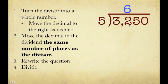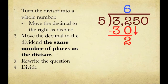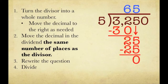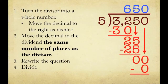Our fourth step is to do our work and actually divide. How many times does 5 go into 3? It doesn't. So we see how many times 5 goes into 32 — that's 6. 6 times 5 is 30, subtract that, giving us 2. Bring down our 5. How many times does 5 go into 25? That's 5 times. 5 times 5 is 25, subtract that, giving us 0. Bring down the last 0. 5 goes into 0, zero times. Subtract 0, get 0. The answer is 650.